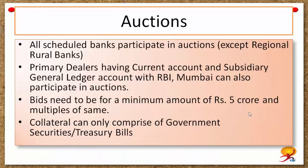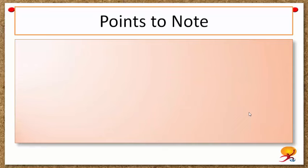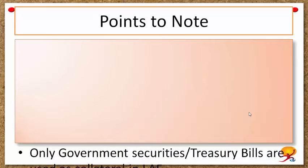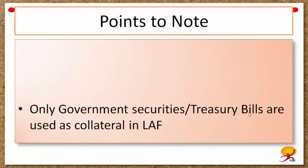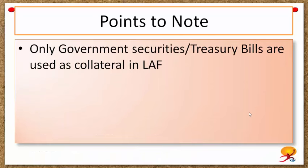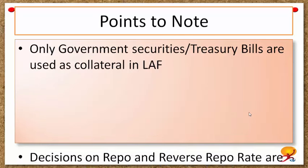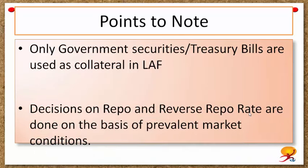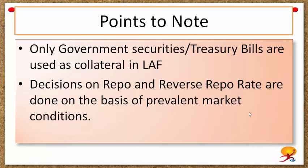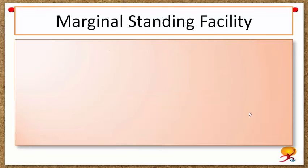Collateral can only comprise government securities or treasury bills, and not other ordinary securities. Only government securities or treasury bills are used as collateral in LAF. Decisions on repo and reverse repo rates are made on the basis of prevalent market conditions.